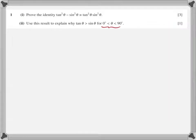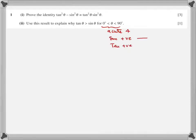Second part: use this result to explain why tan theta is greater than sine theta for theta between 0 and 90. In the first quadrant, sine, cos, and tan are all positive. That means sine squared and tan squared are also positive.